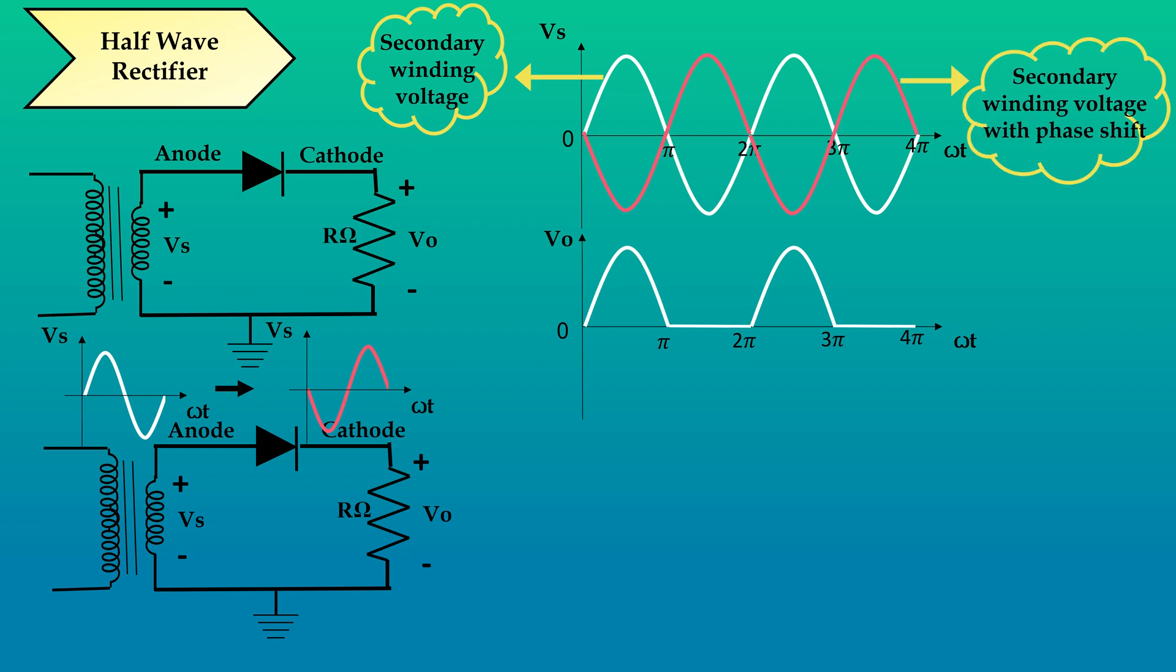Now, what is the output waveform for this circuit? During the negative half cycle, diode acts as open circuit and the load voltage is zero. During the positive half cycle, diode acts as short circuit and the load voltage will be equal to the secondary winding voltage.